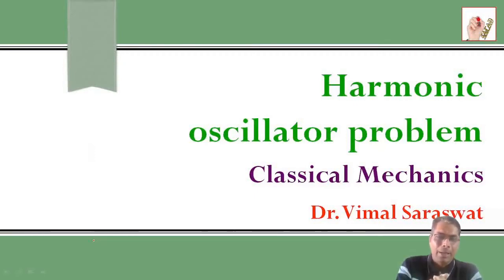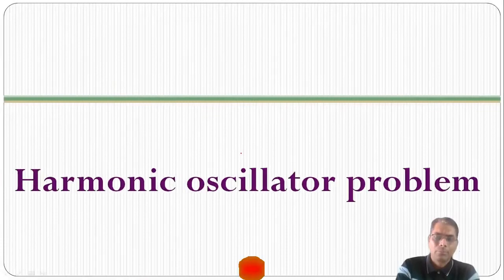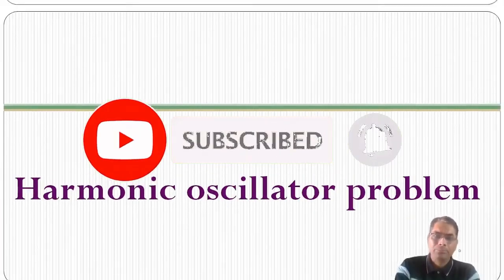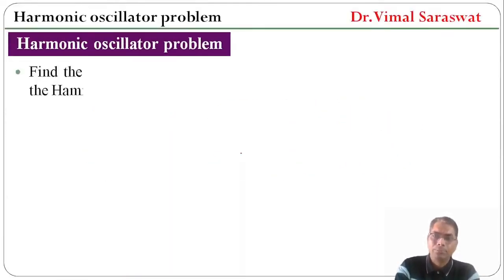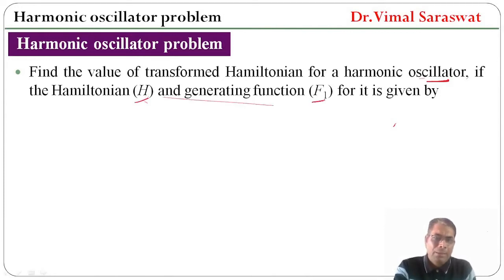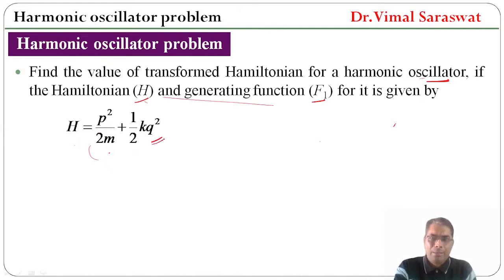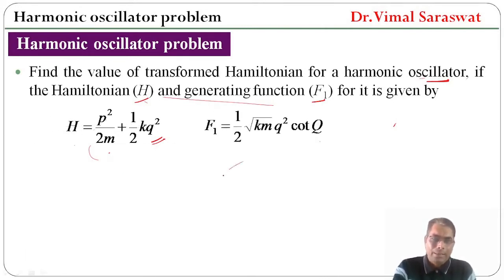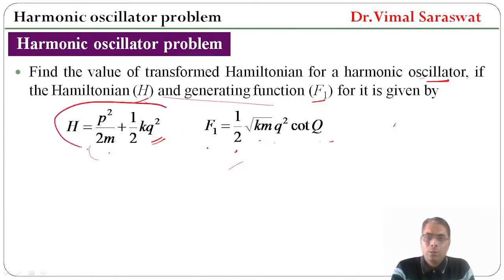Hi friends, welcome back on our YouTube channel. In today's lecture of classical mechanics, we are going to discuss the harmonic oscillator problem. We need to find the value of the transformed Hamiltonian for a harmonic oscillator, where the Hamiltonian H equals p² / 2m + ½kq², and the generating function F1 equals (1/2)√(km) · q² · cot(Q).